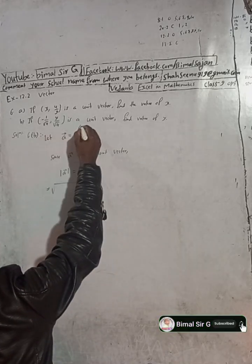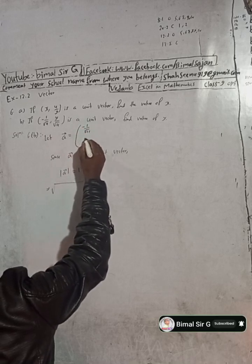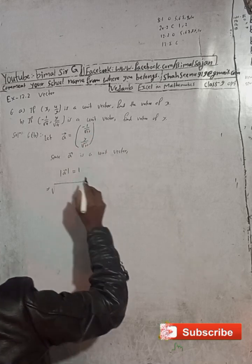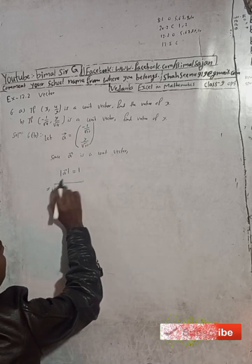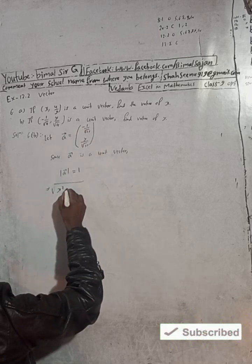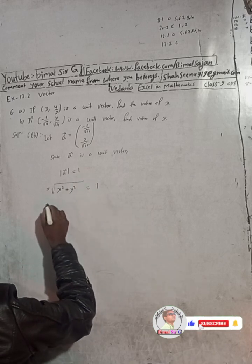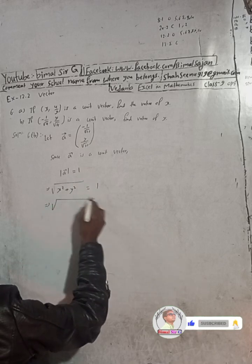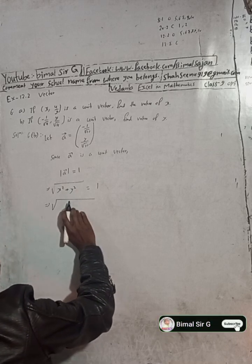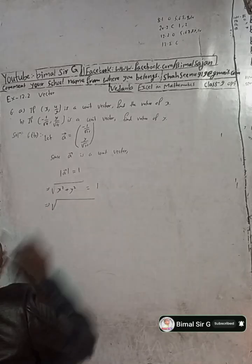Taking the x-component as -1/√11 and y-component as y/√11, and applying the magnitude formula: (-1/√11) squared plus (y/√11) squared equals 1.